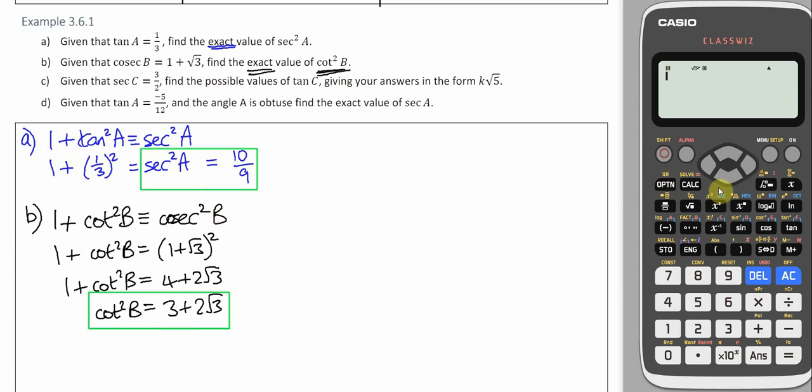So to get B, we'd need to do the inverse sine of 1 over 1 plus root 3. So that there is B. I'm just going to store that under B.